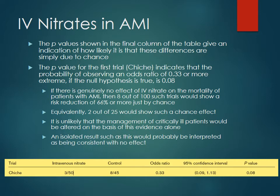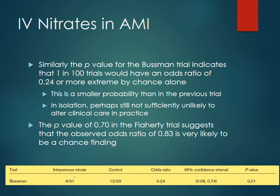We simply cannot take these results and reject the null hypothesis. If you were to see data like this from just one study, you probably wouldn't change your clinical practice — you'd say we can't determine for sure whether nitrates are going to reduce mortality in acute myocardial infarction; there simply isn't enough data. If you were to look at the Busman trial, they show an odds ratio of 0.24, meaning you're a quarter as likely to die if you receive IV nitrates compared to the control group, and they had a p-value of 0.01.